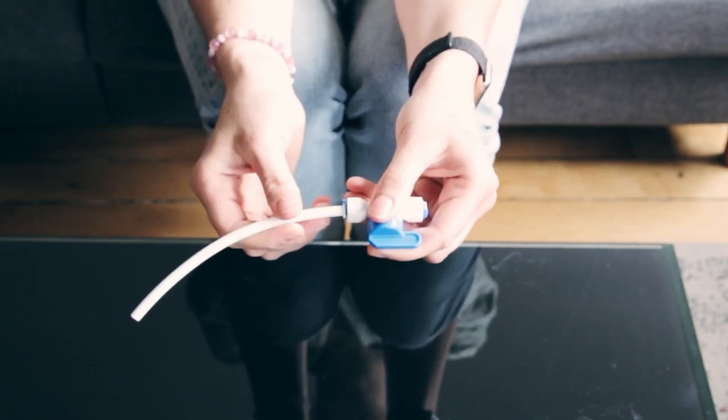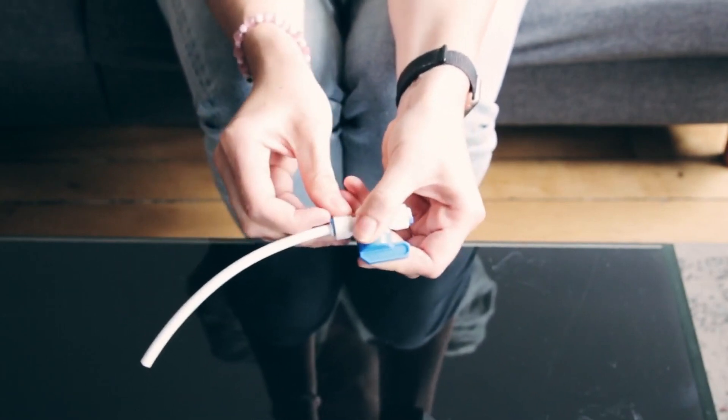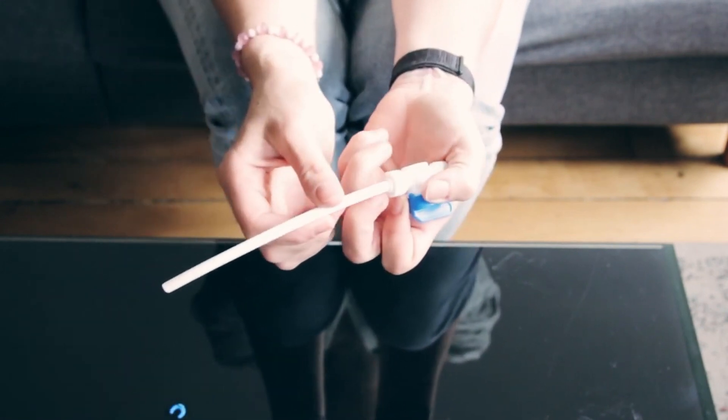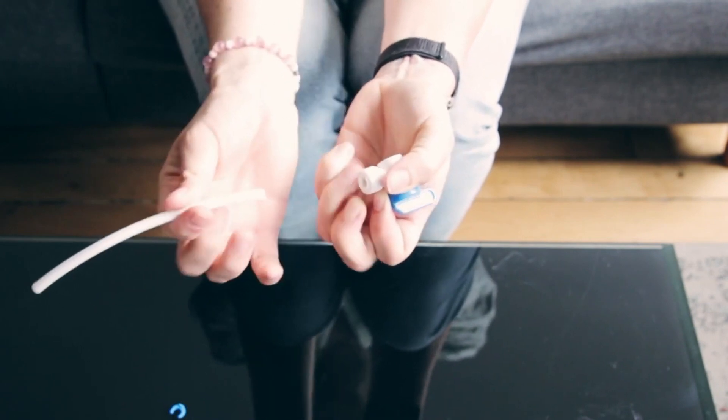To unlock any of these pieces, first remove this blue lock and put it to the side because you'll need it again. Then depress this little white piece and push it in, and the tube should easily release.